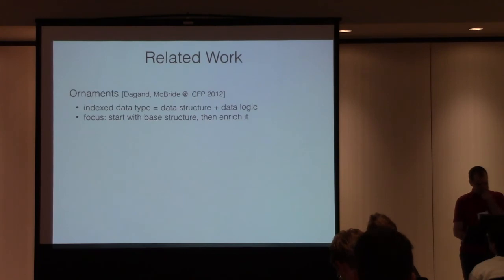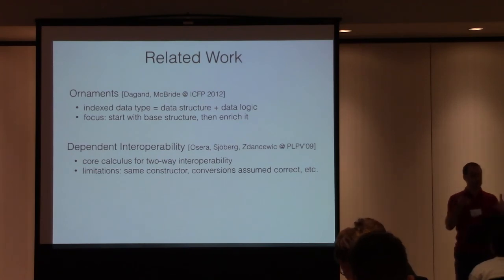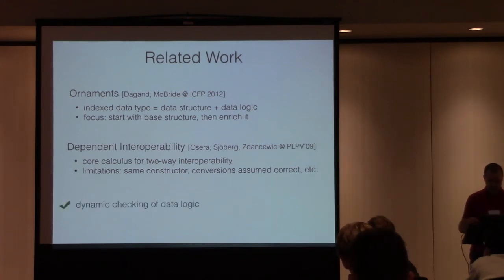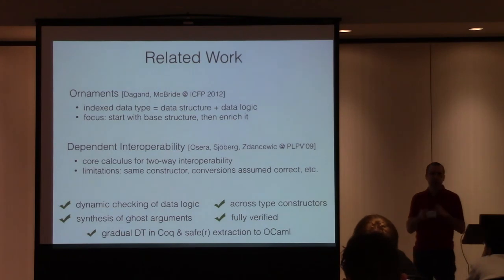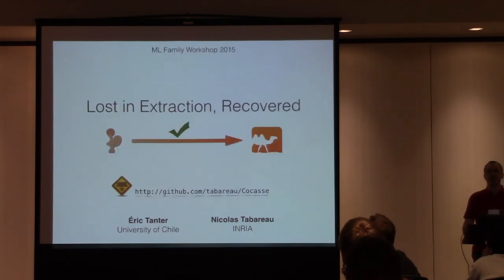That's it, so this is related I mentioned to the idea of ornaments, the focus is a bit different but conceptually that's very very similar. We figured that there was a paper on dependent interoperability by Sdenzevich which actually aims at the same thing except that, so they develop a core calculus to do that, it has a number of limitations that are not present in our work. So we can have this isomorphism across constructors, we don't assume that the conversion functions are correct, we are correcting in Coq first. And so what we get, we get this dynamic checking of that logic across the constructors with synthesis of argument, it's verified and you can use it to do gradual dependent types programming in Coq using the axiomatic version if you are willing to sacrifice purity or you can stick to the monadic version and if you do extraction to OCaml you get this safer extraction. That's it, with this I'm happy to take your questions.